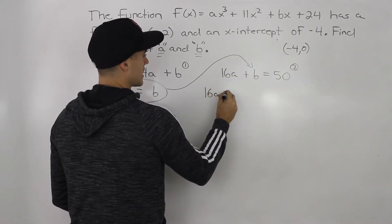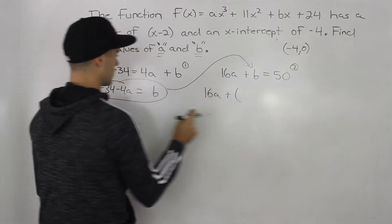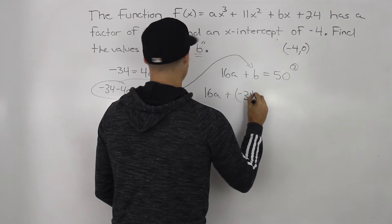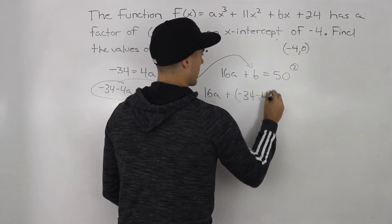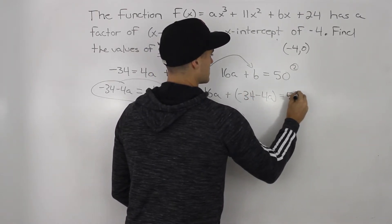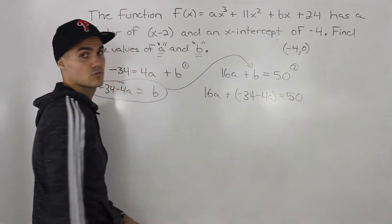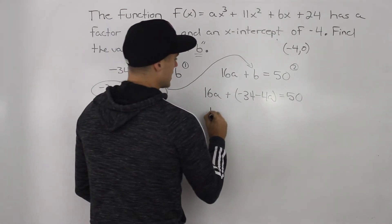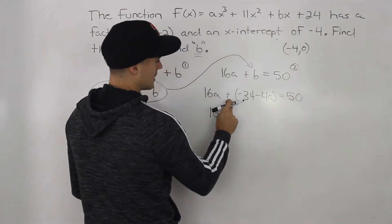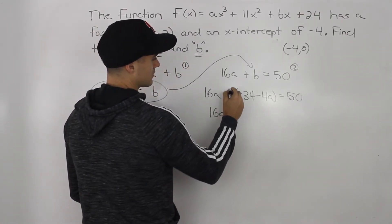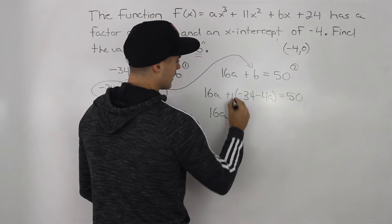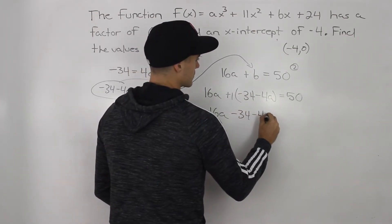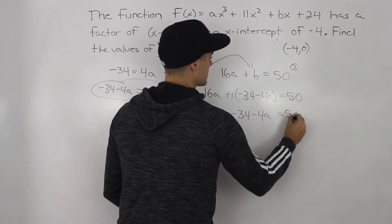I'm going to take this b value and sub it into this b value here. So I'll have 16a plus, you want to put this whole expression in brackets, always put brackets. When in doubt, put brackets. It could save you a lot of headache in the end. So 16a, there's like a positive 1 in front here. So distributing it inside, you just end up with negative 34 minus 4a, that same expression. And that's going to equal 50.